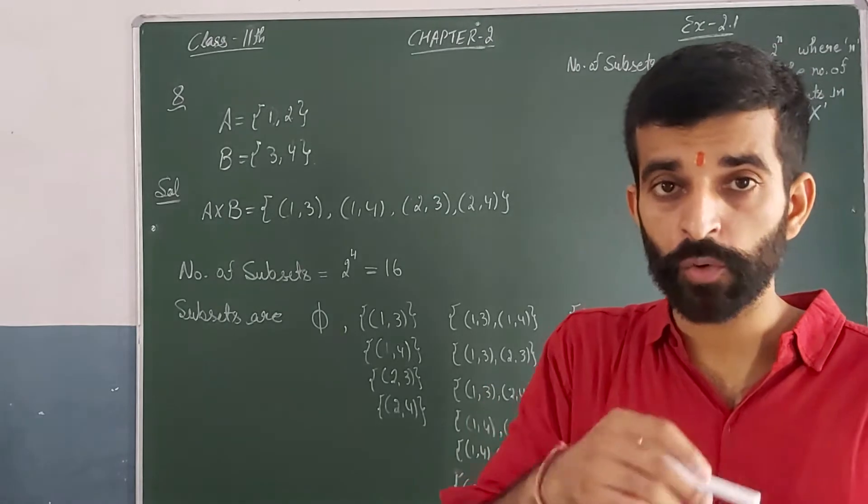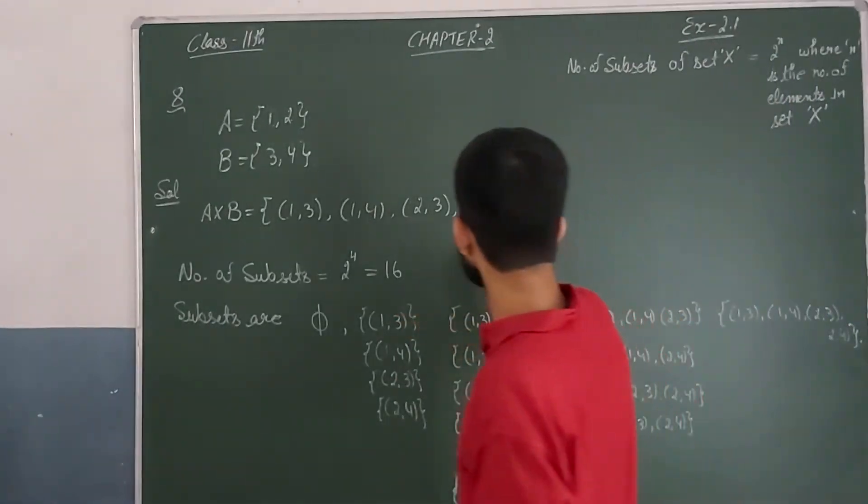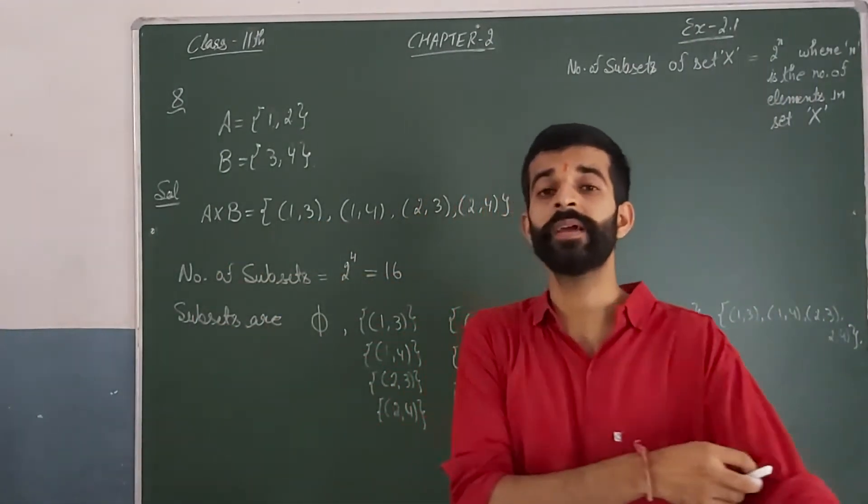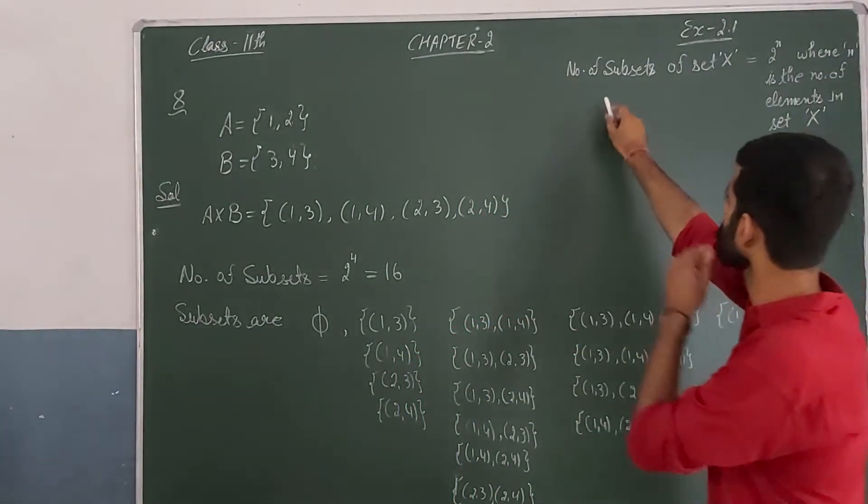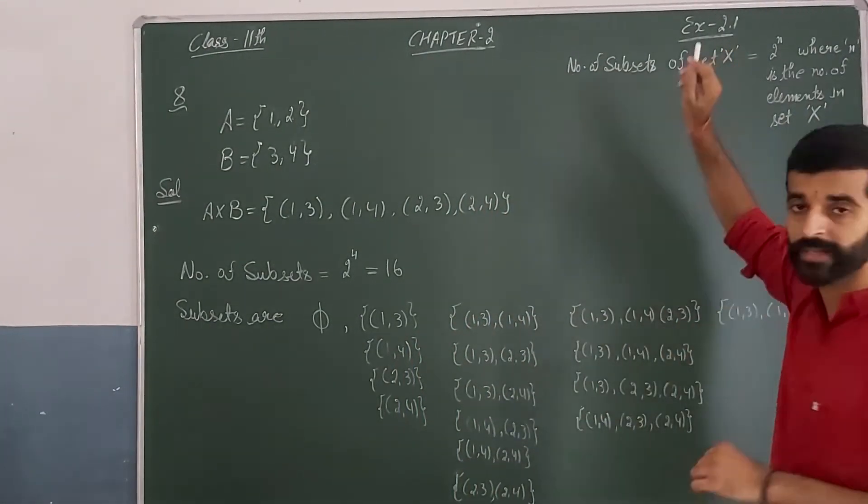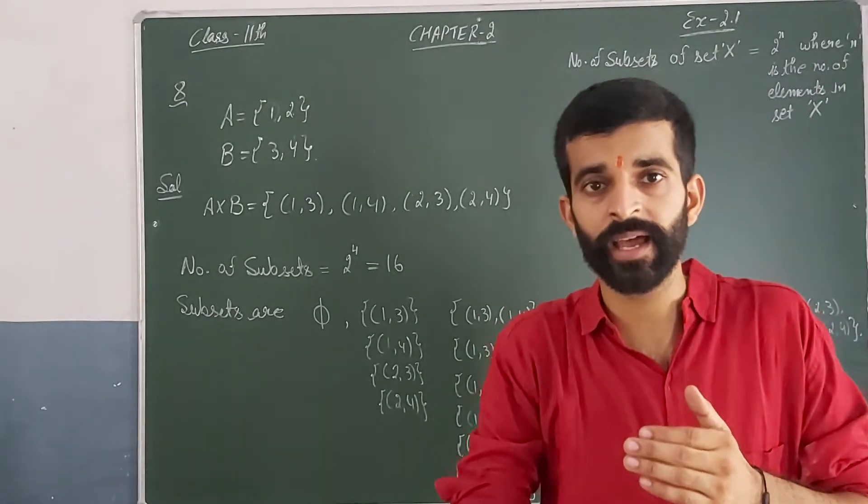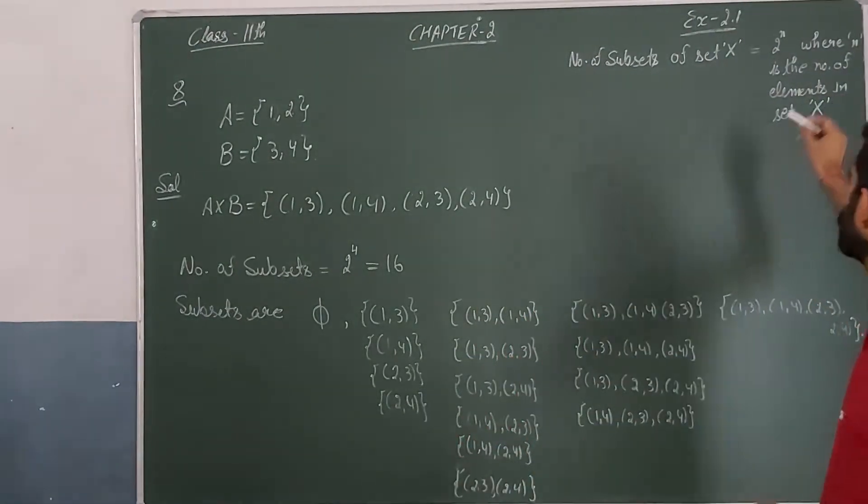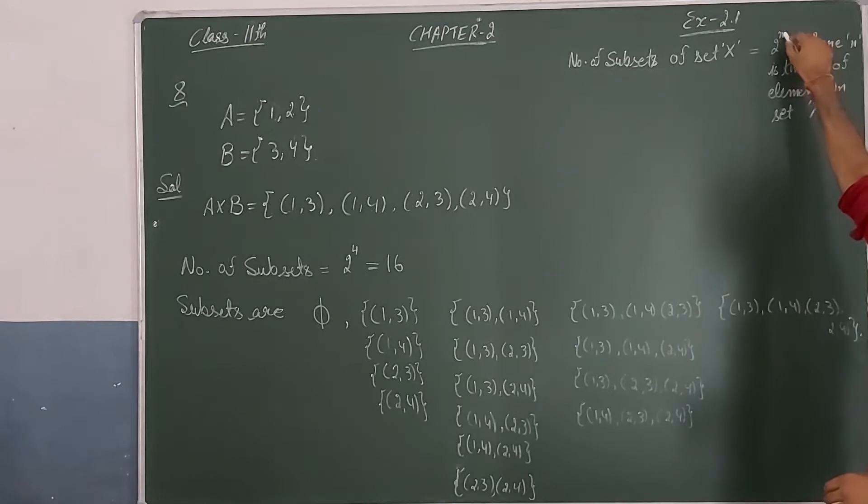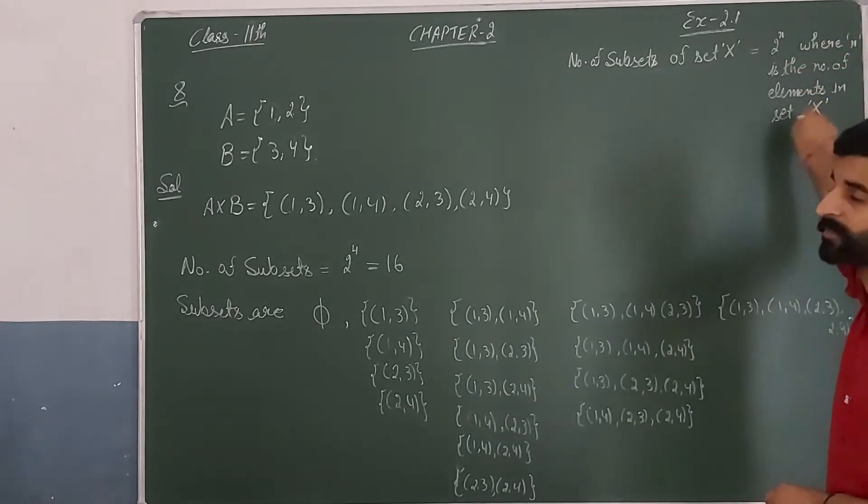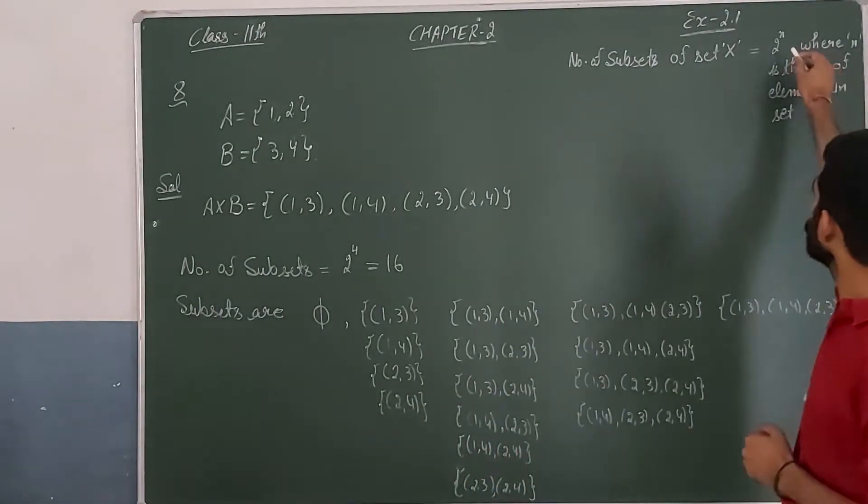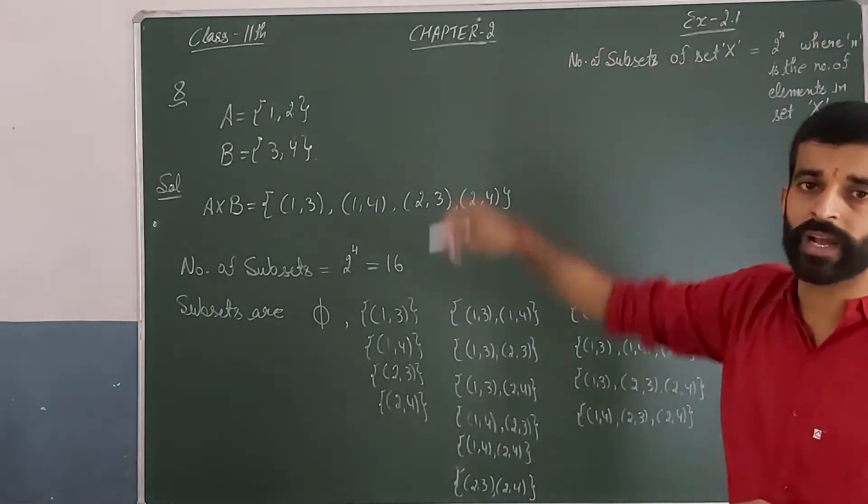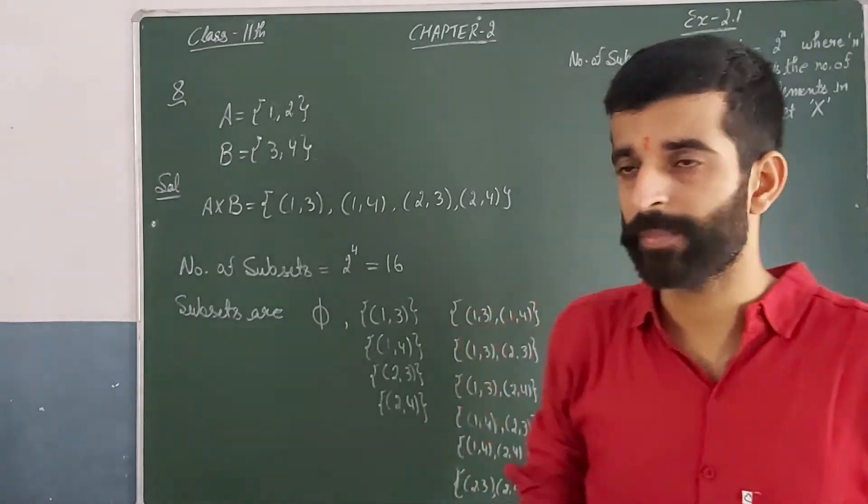Now the next question: how many subsets will A cross B have? If you have a set X, then the number of subsets of X equals 2 to the power n, where n is the number of elements in X.